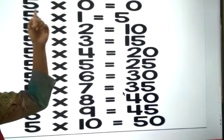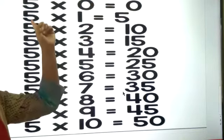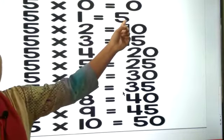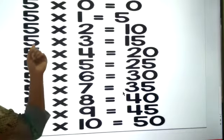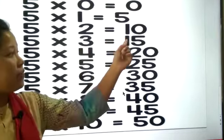5 0s are 0, 5 1s are 5, 5 2s are 10, 5 3s are 15.